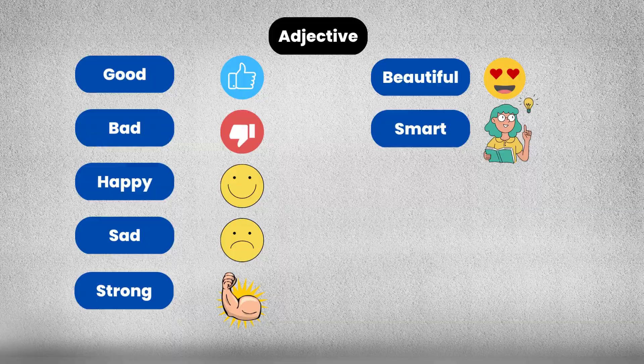Beautiful, smart — you will understand them better as we use them in our sentences. If you want to understand nouns, pronouns, verbs, or adjectives in more detail, you can check out my videos. I have attached the links in my description box. Before we start putting them together, we need to understand a basic rule.